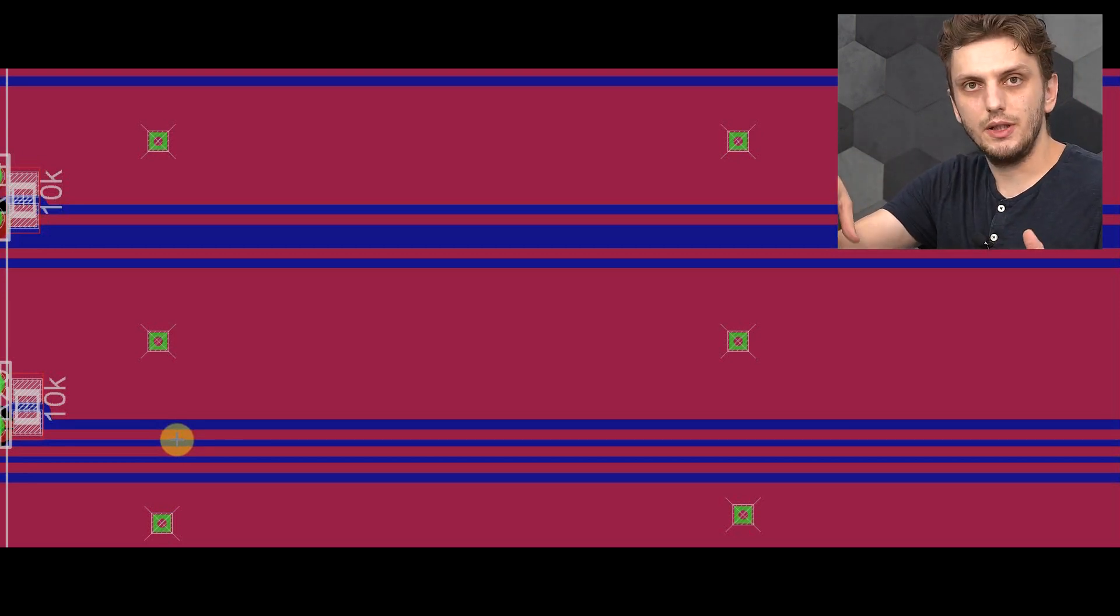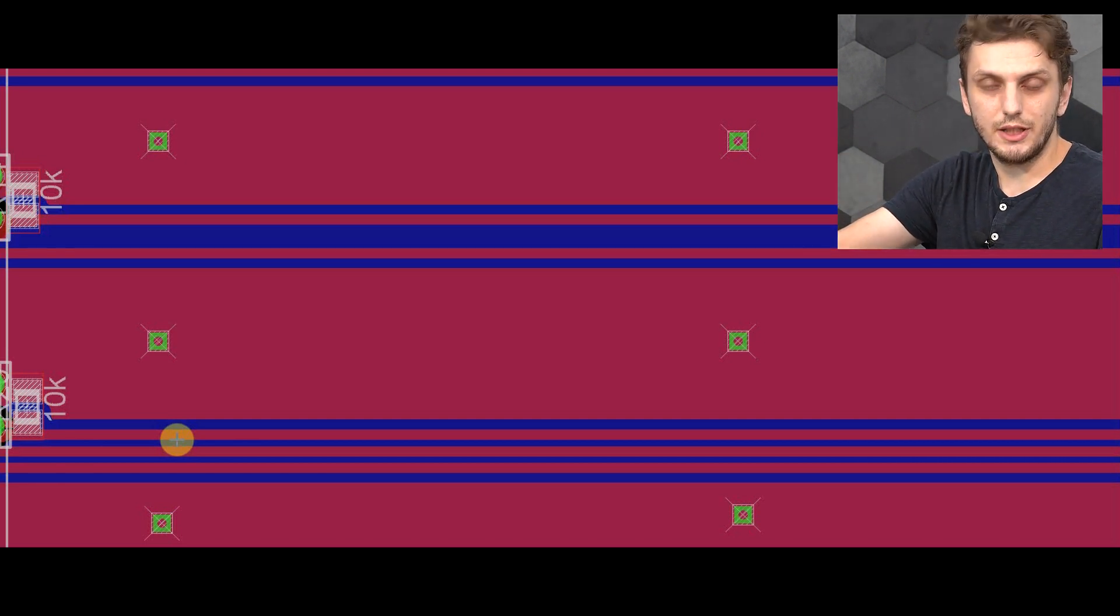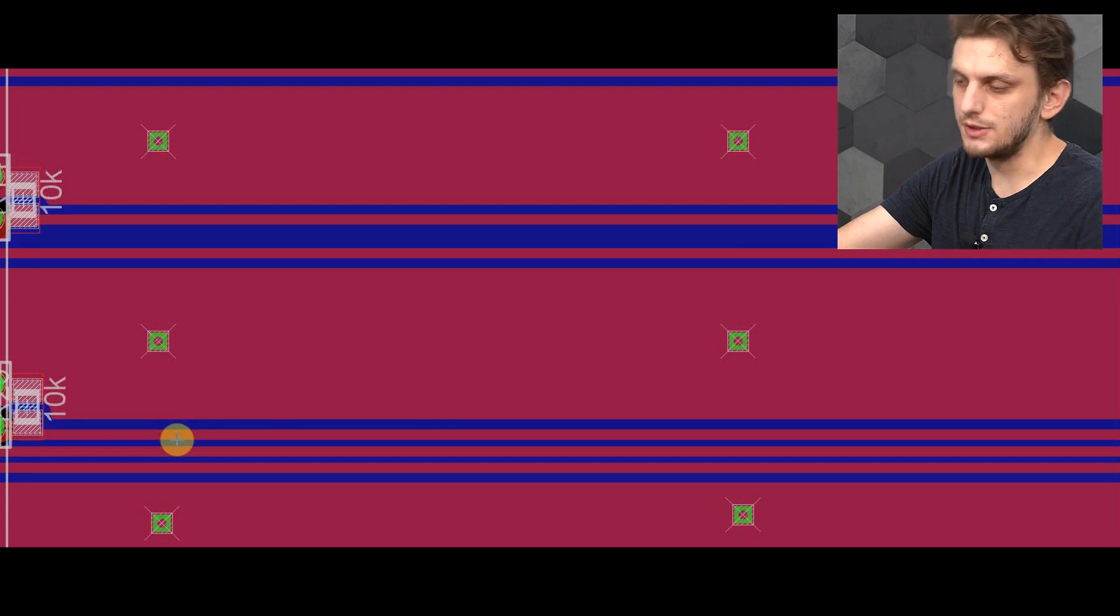Basically this will give your aggressor trace something to couple to, capacitively, so it can no longer couple to the victim trace. And also we have another extra trace which will absorb part of the magnetic fields.